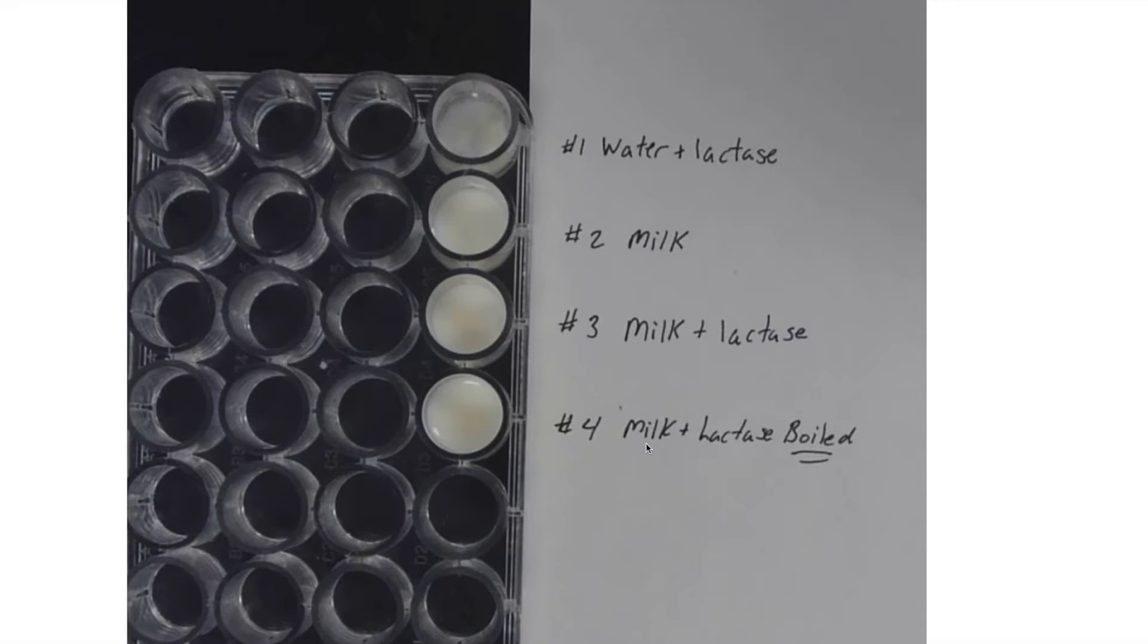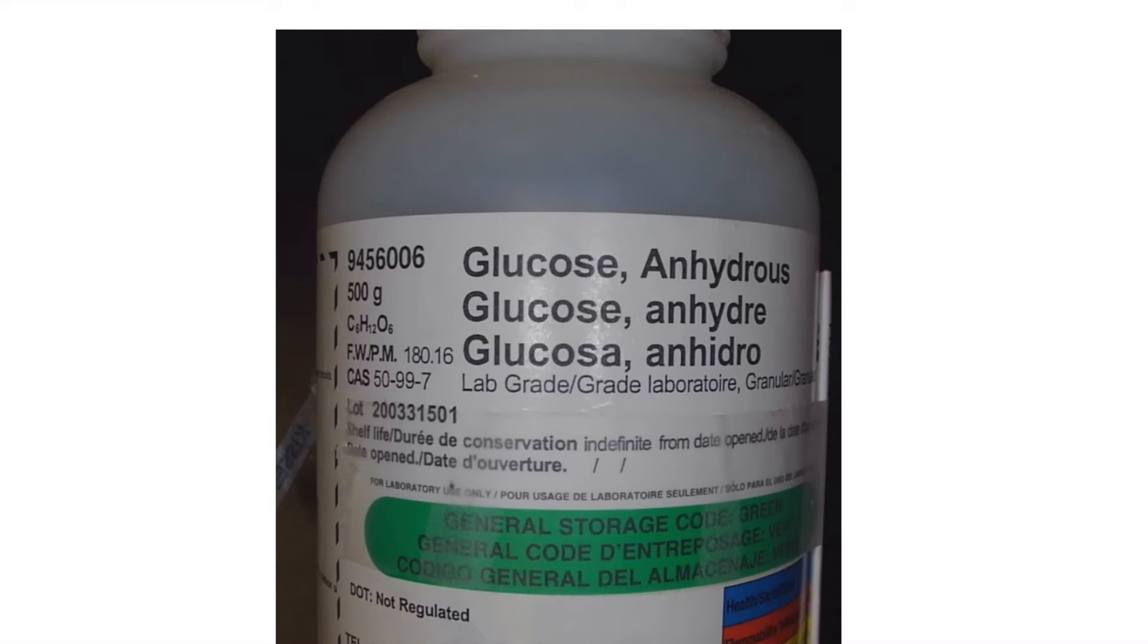Fourth one, we're going to have milk and lactase, except what we're going to do is we're going to boil the lactase with the milk before we allow it to proceed. But first, why don't we take a look and see what glucose looks like when it's being tested positive on the glucose test strips.